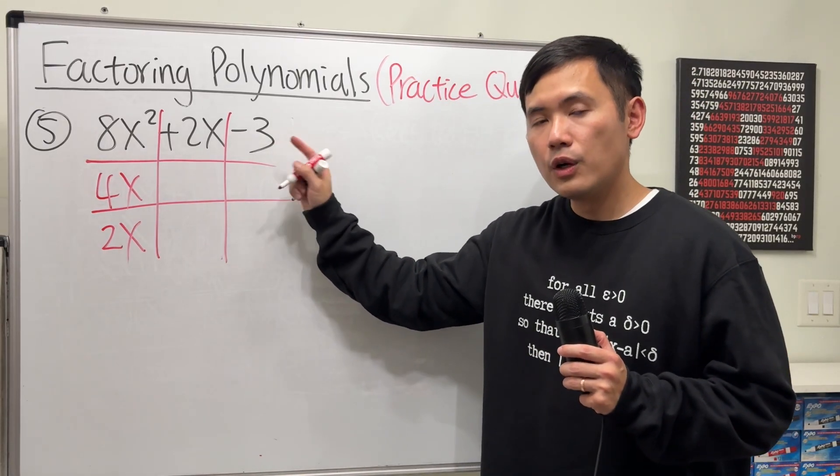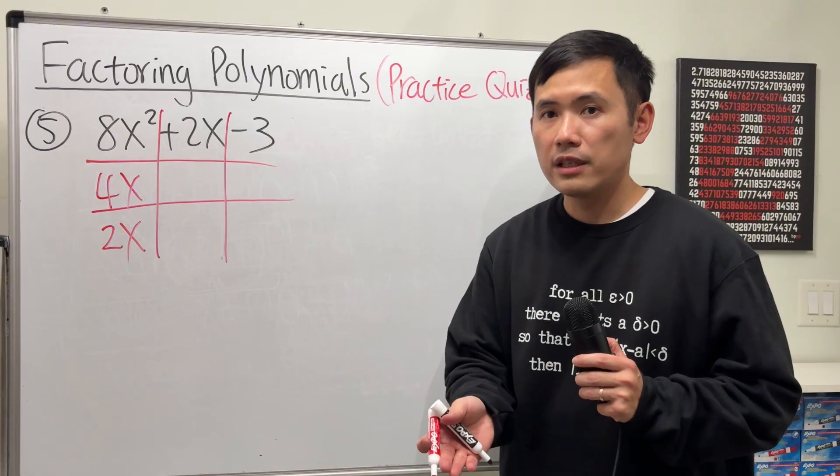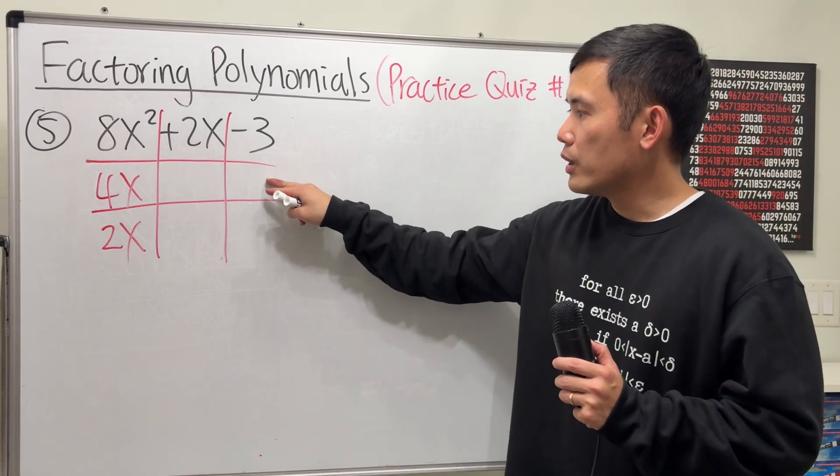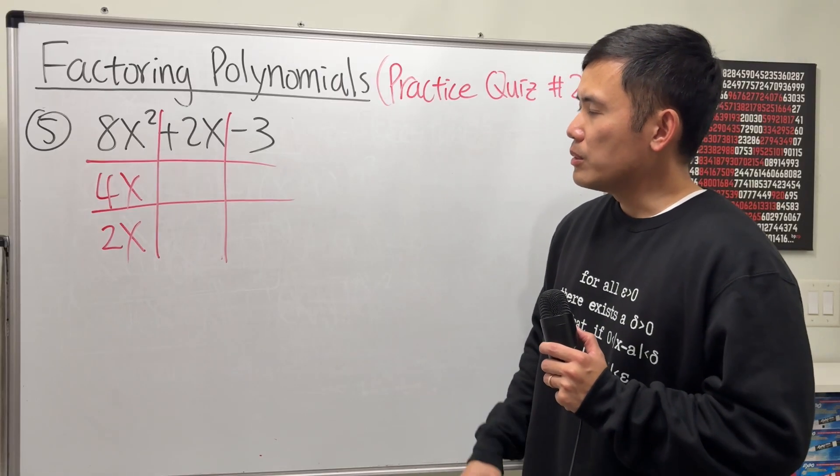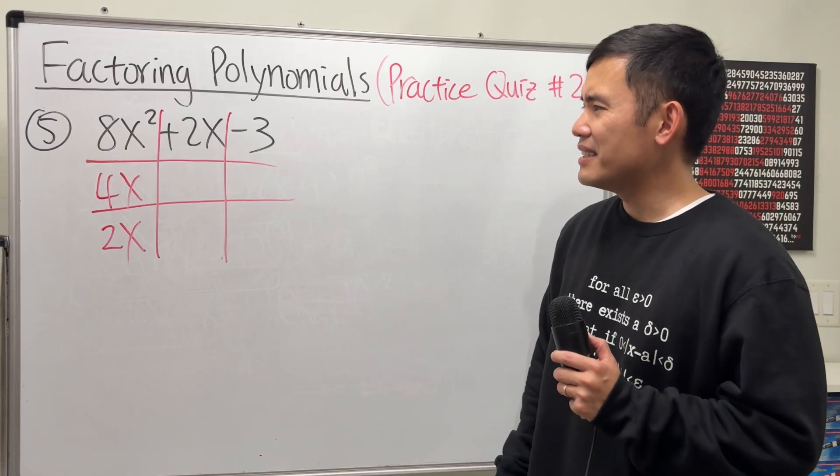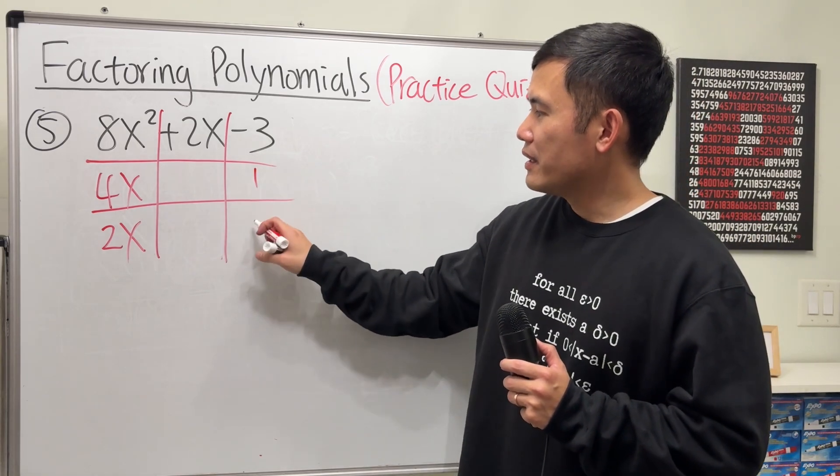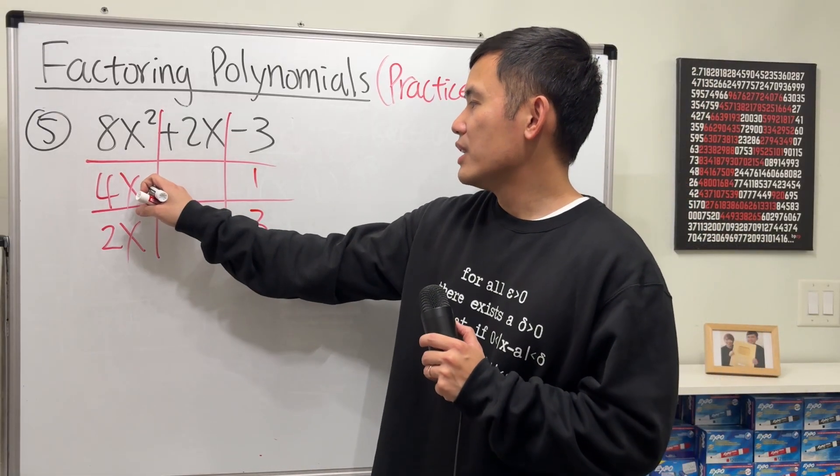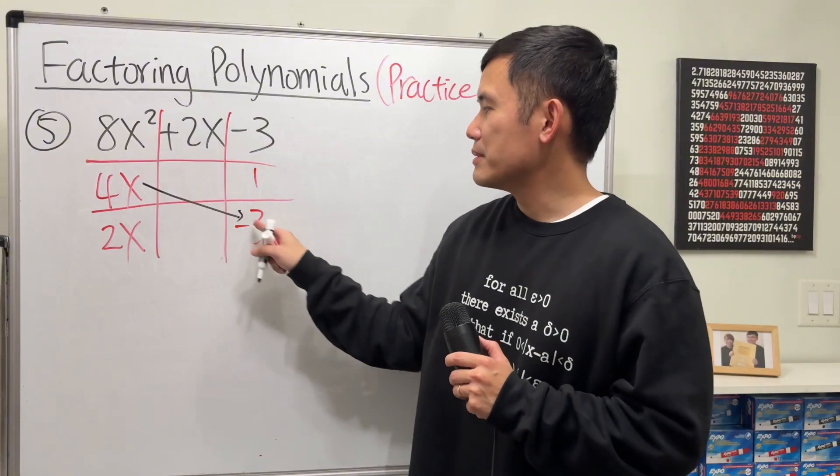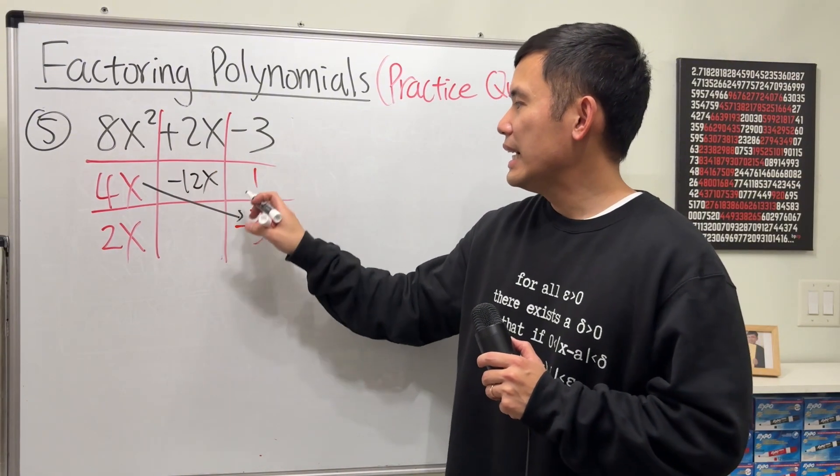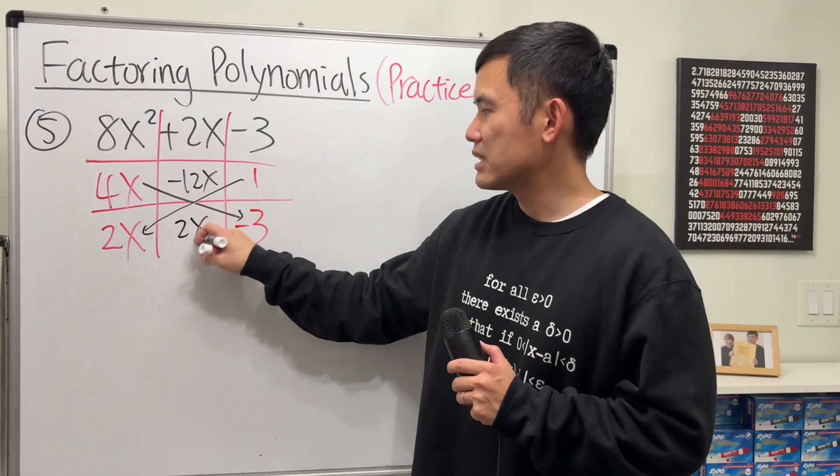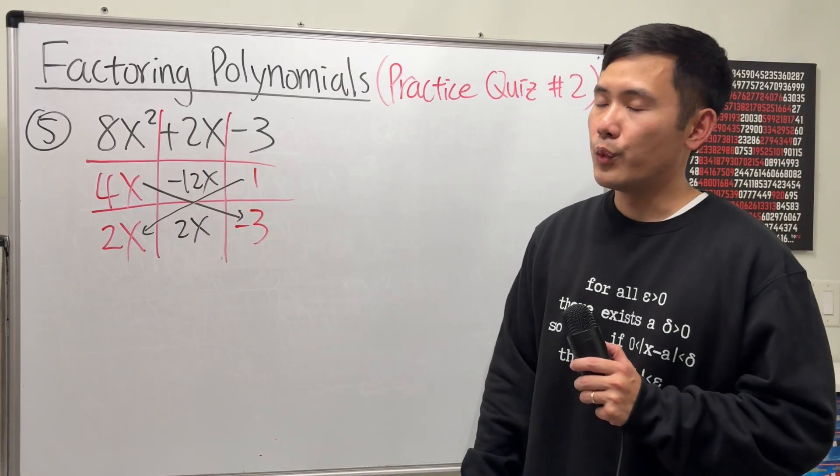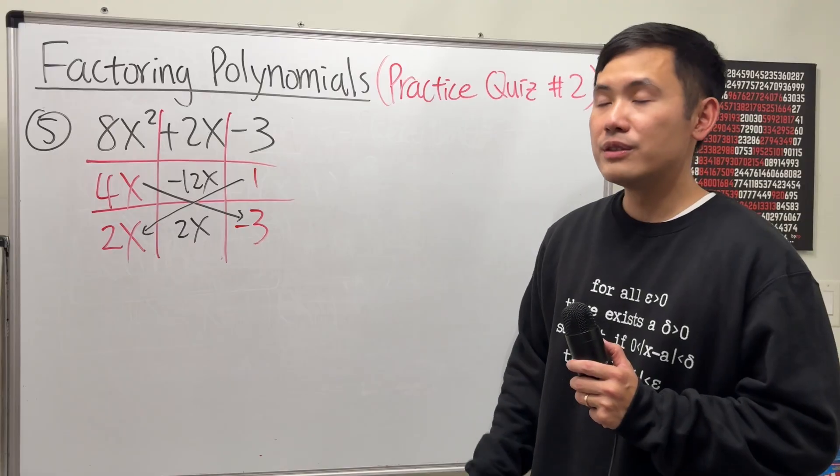Now going to negative 3 - what times what would give us negative 3? 1 times -3, or -1 times +3. Which one do I use? And also here, the order matters. So I just kind of have to try it a little bit. I can put 1 here and 3 here, and maybe let's make this negative. Does this work? Well, this is how we check. You take this times that. 4x times -3 is -12x. And you take this times that - that's 2x. Combine the middle terms, this and that. Do we get positive 2? We don't. So unfortunately, this is not the correct combination. So let's try it again.